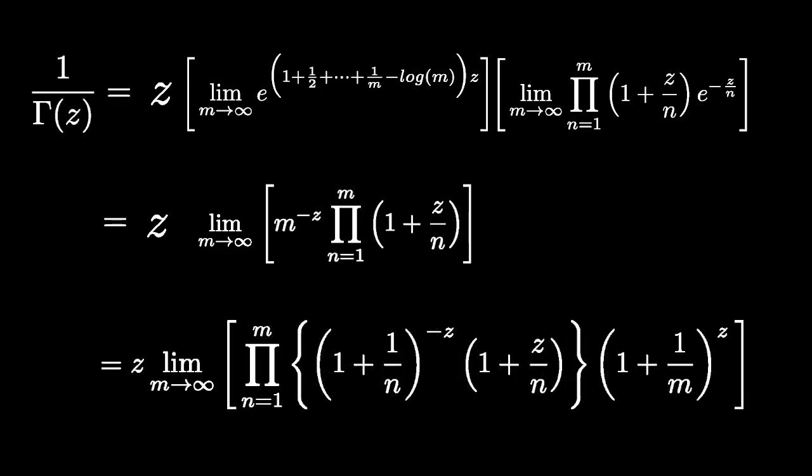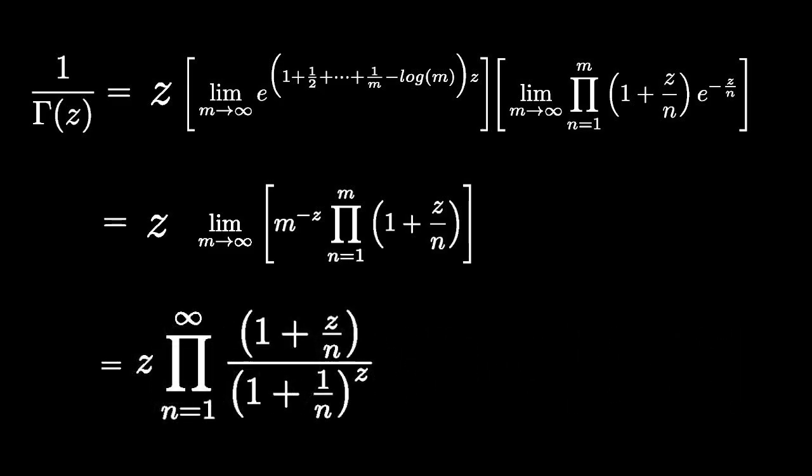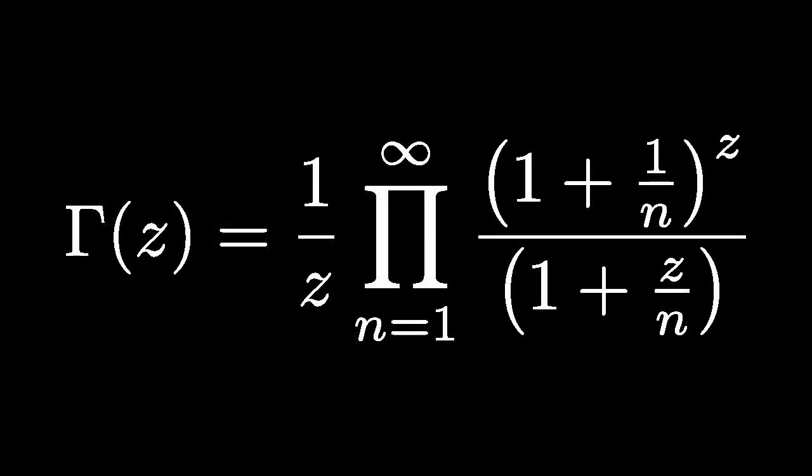And in the limit as m goes to infinity, the factor 1 plus 1 over m goes to 1. Taking the inverse of this expression, we arrive at the product formula for the gamma function.